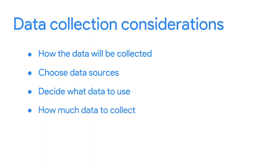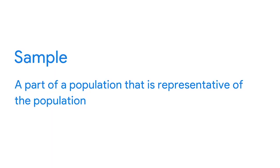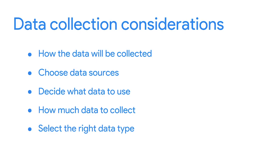Now let's talk about how much data to collect. In data analytics, a population refers to all possible data values in a certain dataset. So if you're analyzing data about car traffic in a city, your population would be all of the cars in that area. But collecting data from the entire population can be pretty challenging. That's why a sample can be useful — a sample is a part of a population that is representative of the population. You might collect a data sample about one spot in the city, or pull a random sample from all existing data in the population. How you choose your sample will depend on your project. As you collect data, you'll also want to make sure you select the right data type.